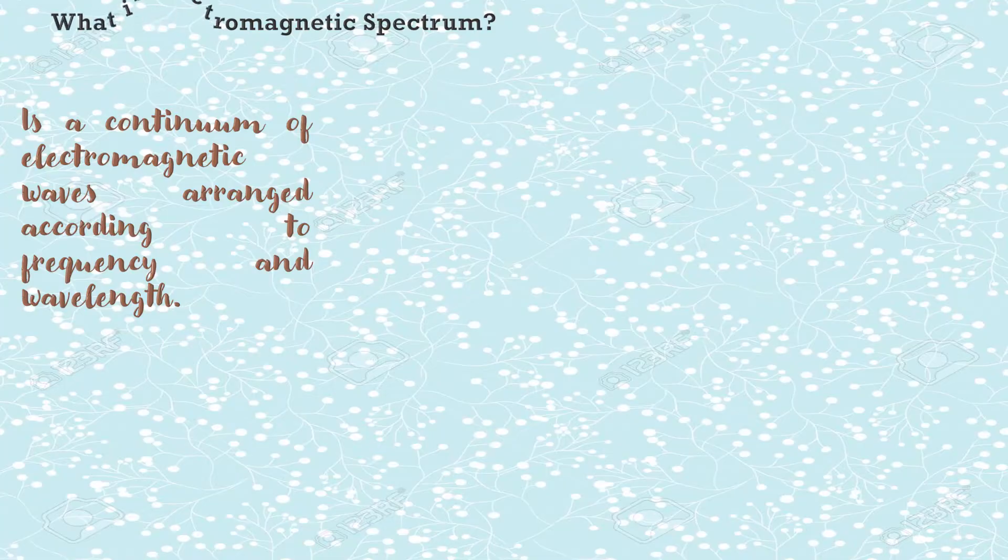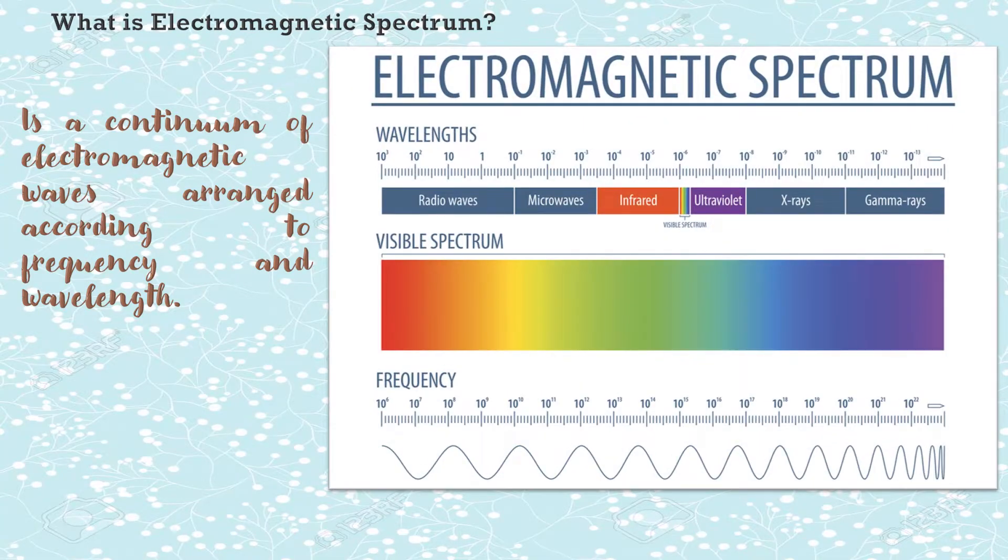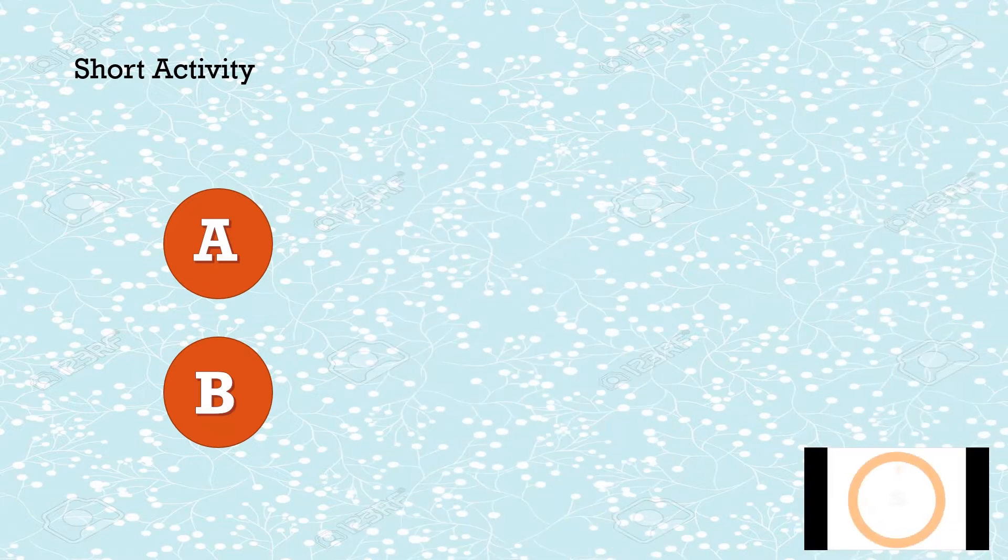Now, what is electromagnetic spectrum? It is a continuum of electromagnetic waves arranged according to frequency and wavelength. The figure shows the electromagnetic spectrum. It consists of the wavelengths of the different electromagnetic waves, the visible spectrum, and the frequency of the different EM waves. Learners, let's try to answer this short activity.